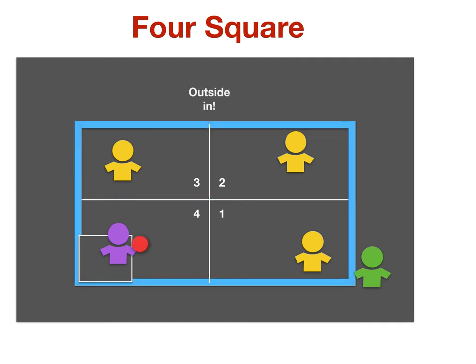So if inside is out, then outside must be in. So in this point, the player in square two hits the ball underhand to the person in square three. The ball hits the outside line, so the player in square three is out.